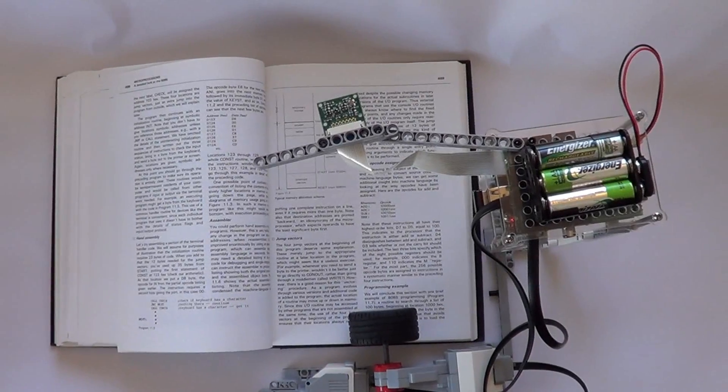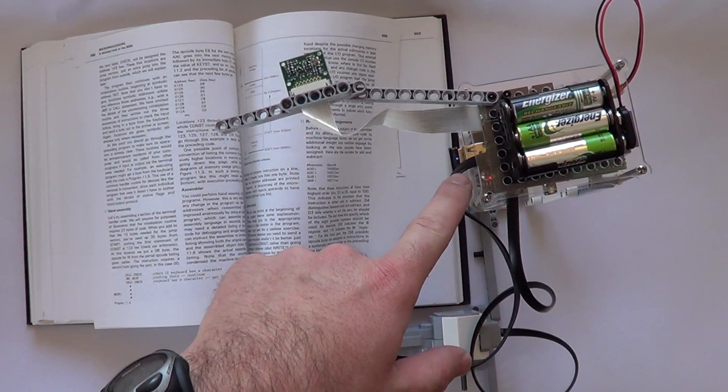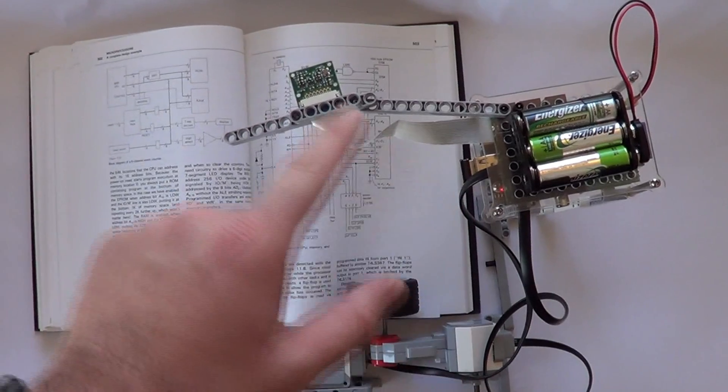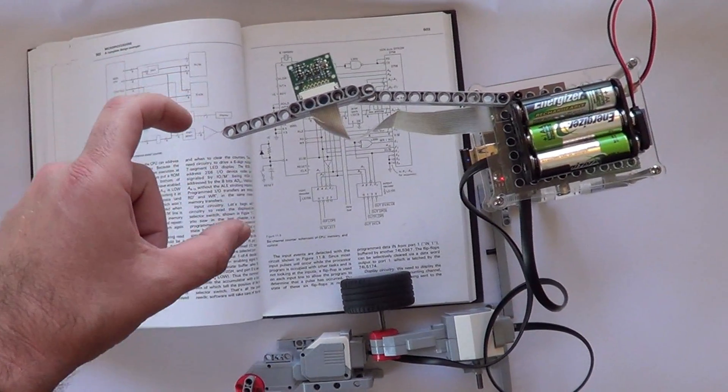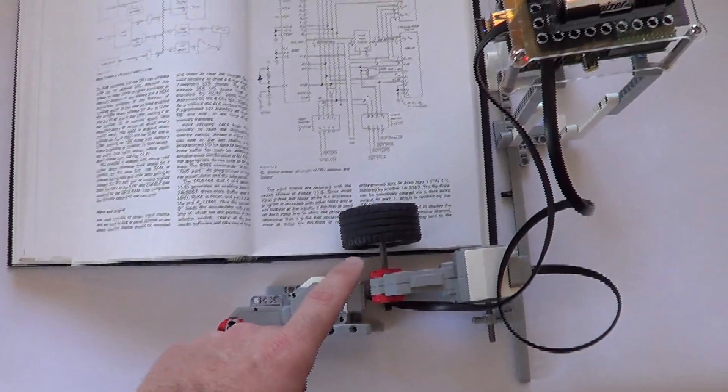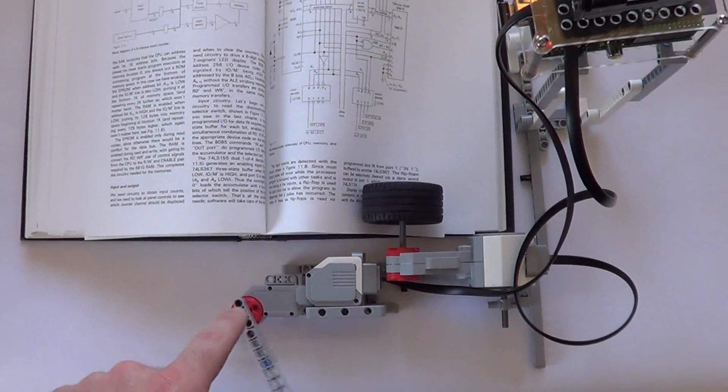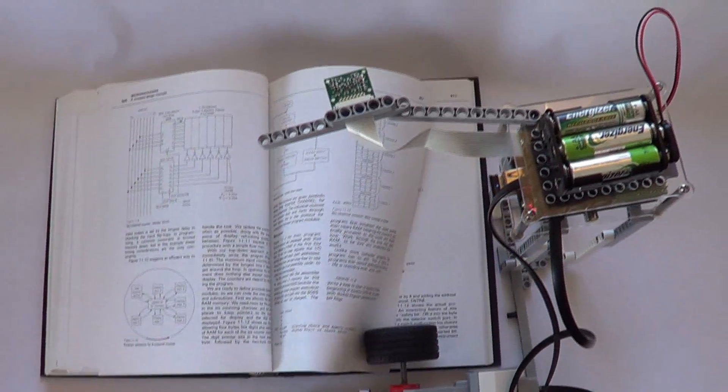This is an overview of the BrickPi book reader. We've got a BrickPi here, which is the brains of the operation. We've got a Raspberry Pi camera up top that takes pictures of the sheets of paper. We've got two EV3 motors down here: one that's pushing the page up, and one that comes around as an arm and pushes the page over to turn the page.